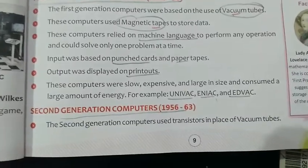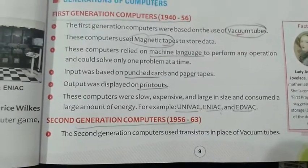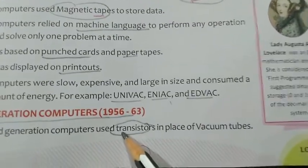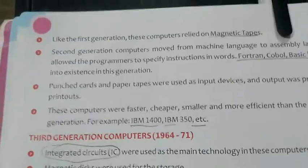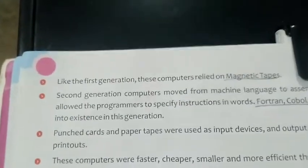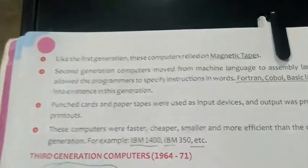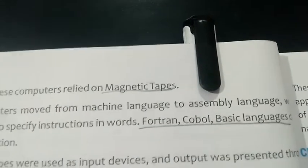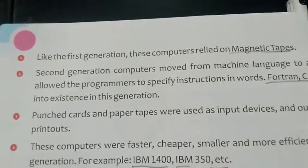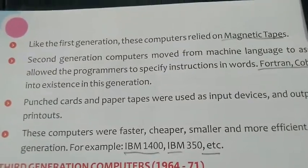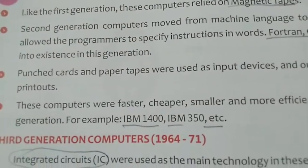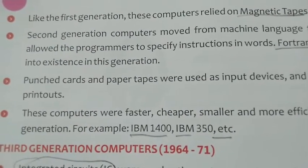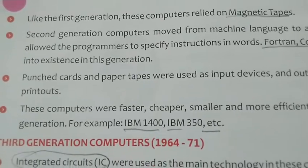Second generation computers span from 1956 to 1963. In the second generation, vacuum tubes were replaced by transistors. Other features include use of magnetic tapes, development of programming languages like Fortran, COBOL, and BASIC, and use of punch cards and paper tapes. Machines developed at this time include IBM 1400 and IBM 350.